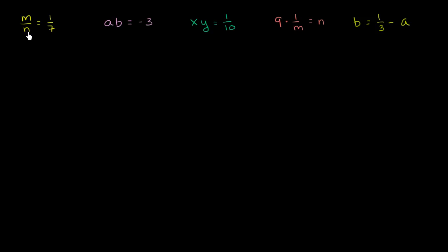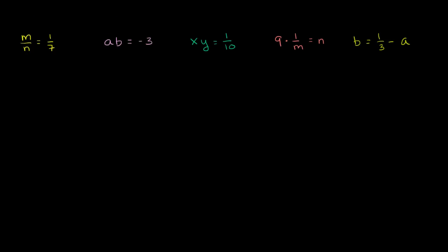So over here we have m over n is equal to 1/7. To analyze this, you want to separate the two variables onto different sides of the equation. The pattern for direct variation is m = k·n, and for inverse variation it's m = k·(1/n).